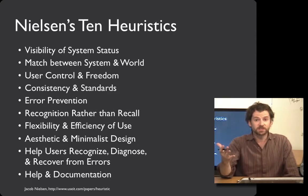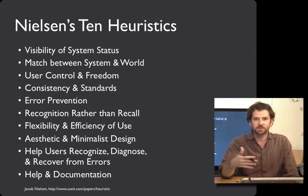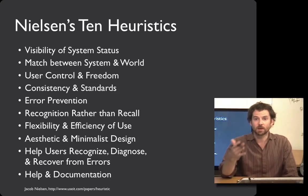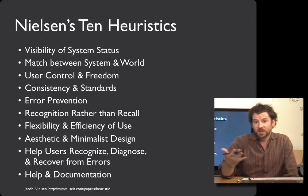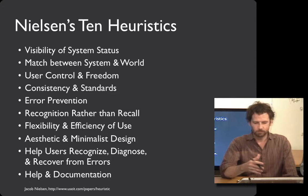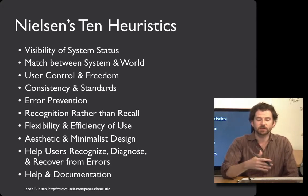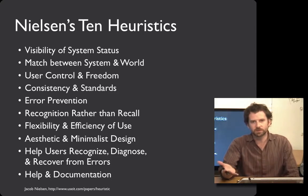Here are Nielsen's 10 heuristics, and they're a pretty good set. There's nothing magic about these heuristics — they do a good job of covering many of the problems you'll see in many user interfaces. But you can add any that you want and get rid of any that aren't appropriate for your system. We're going to go over the content of these 10 heuristics in the next couple of lectures. In this lecture, I'd like to introduce the process that you're going to use with these heuristics.